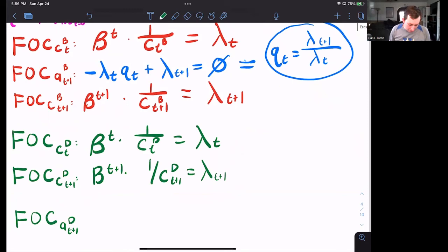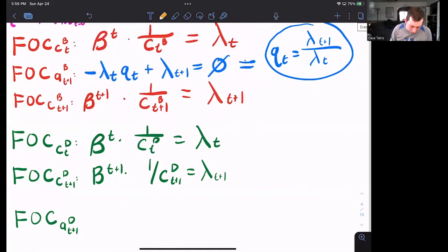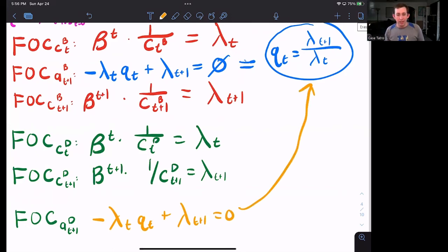Dave has the same budget constraint as Bill. So that's going to look very similar to that first order condition for AT plus one for Bill. So this is just going to be negative lambda T QT plus lambda T plus one equals zero, which is just going to lead us to the same place.